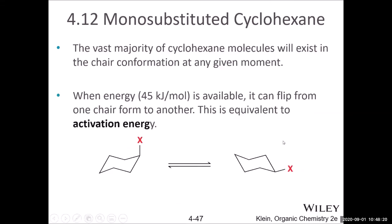Many bonds are twisting during a ring flip — it looks complicated, but a model makes it easy to see. From one chair conformation through the ring twist, what is in the axial can become equatorial. As the ring twists, it goes through an eclipsed conformation (per the Newman projection), and all other bonds keep rotating, each trying to achieve ~109.5°. Eventually the molecule reaches another chair where the previous axial substituent becomes equatorial.